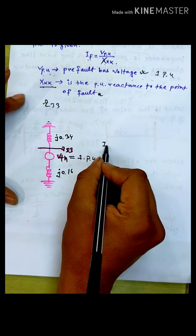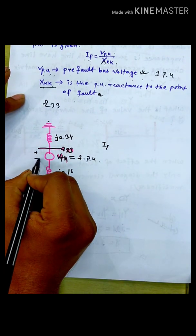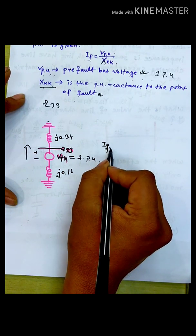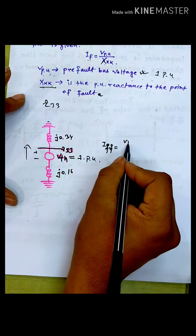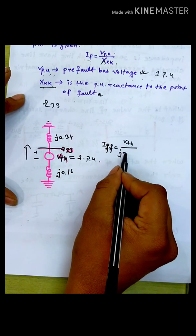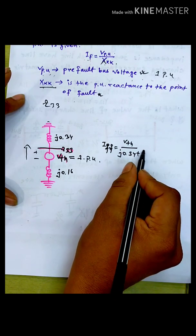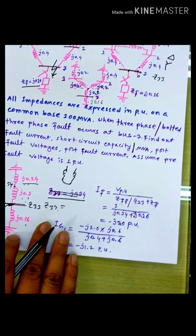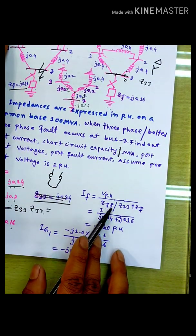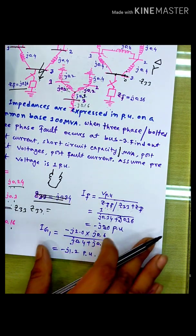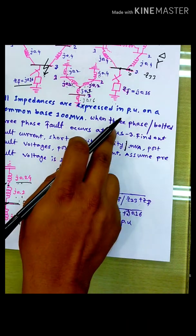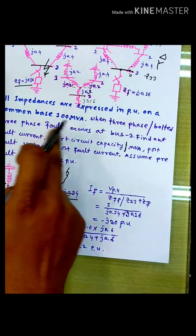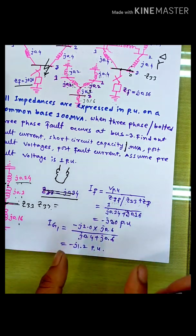We have to convert the current — this is a fault current. VTI equals J.34 plus J.16. We have to convert JFF, which is J.33 plus J.F. This we have to convert for the three-phase fault. If you have a bolted 3-phase fault, you will count the fault impedance.